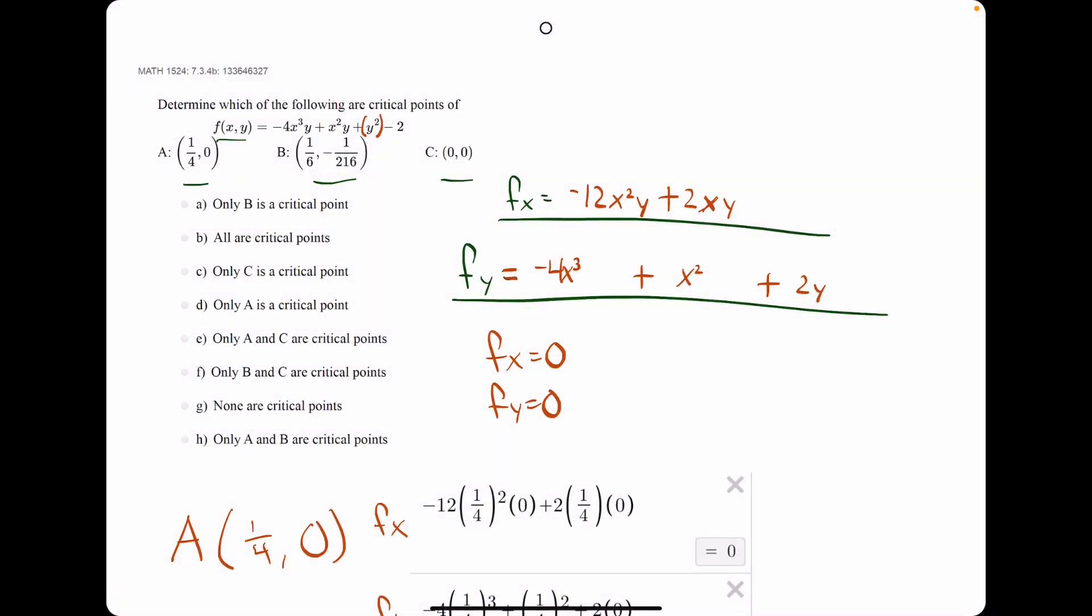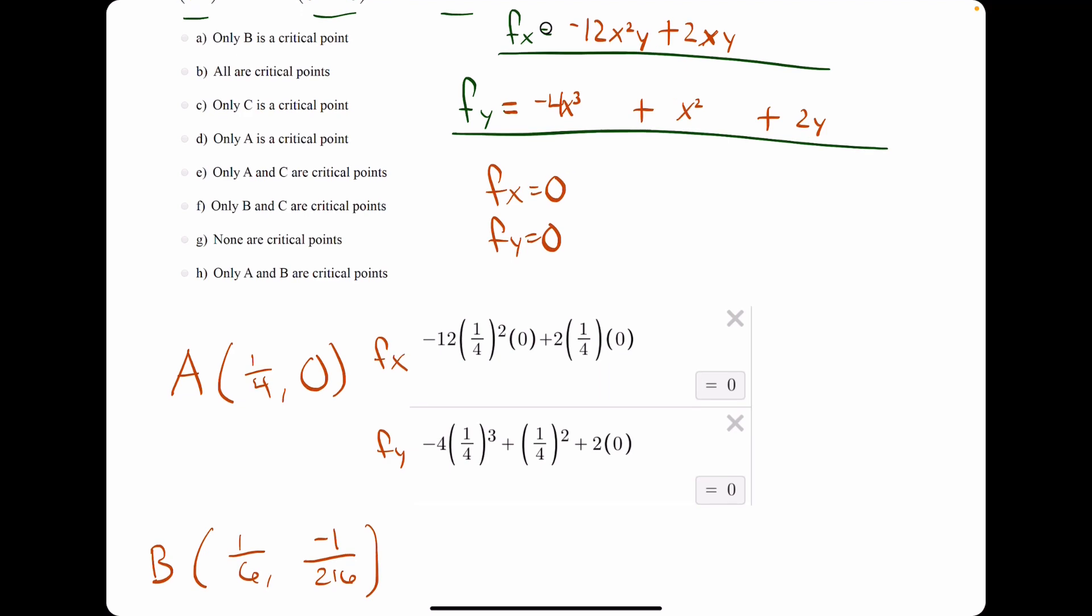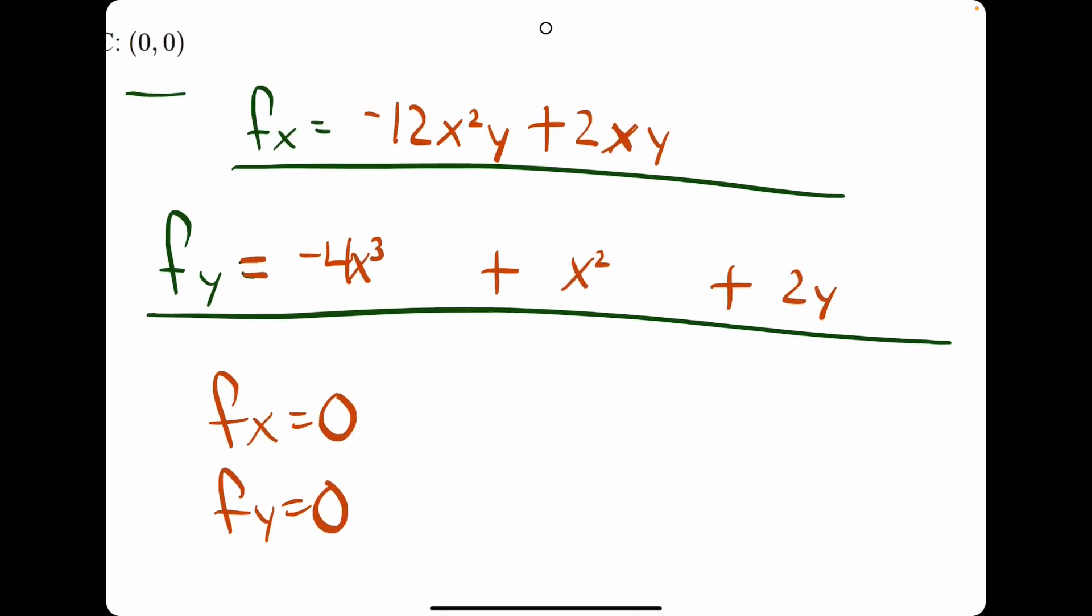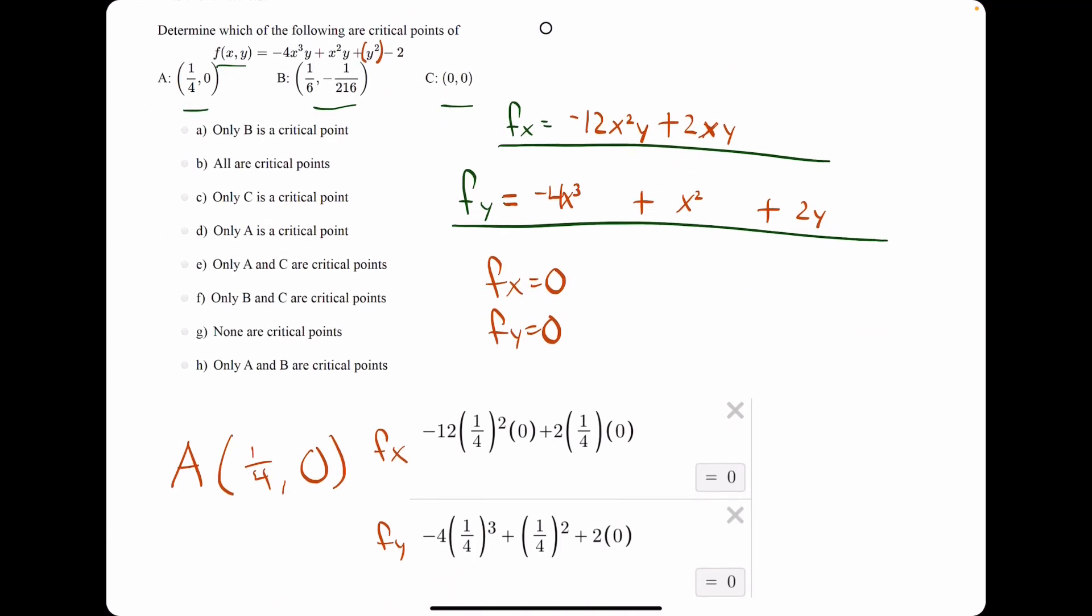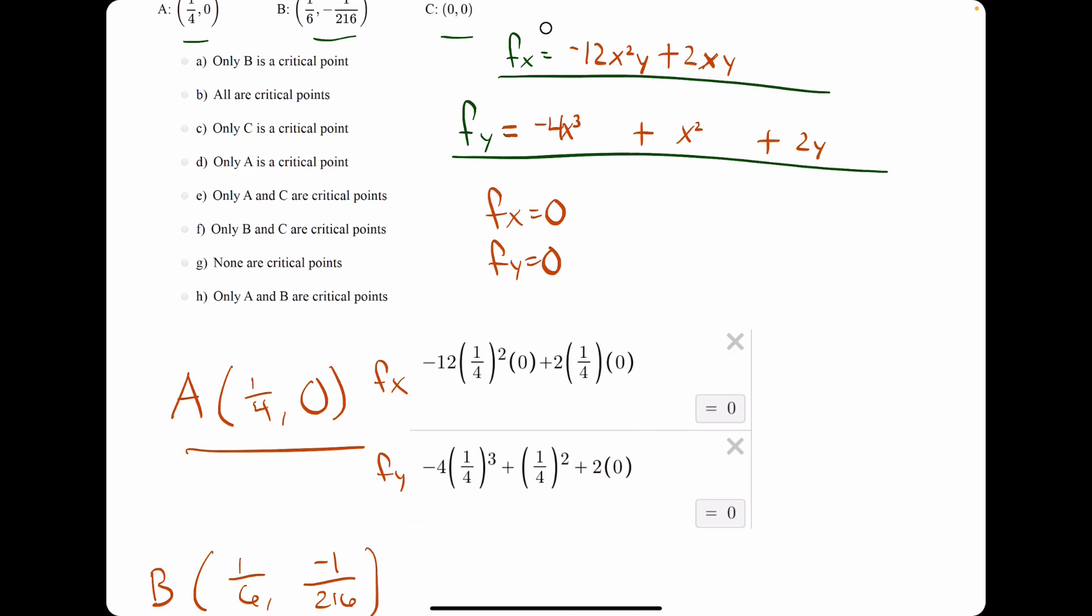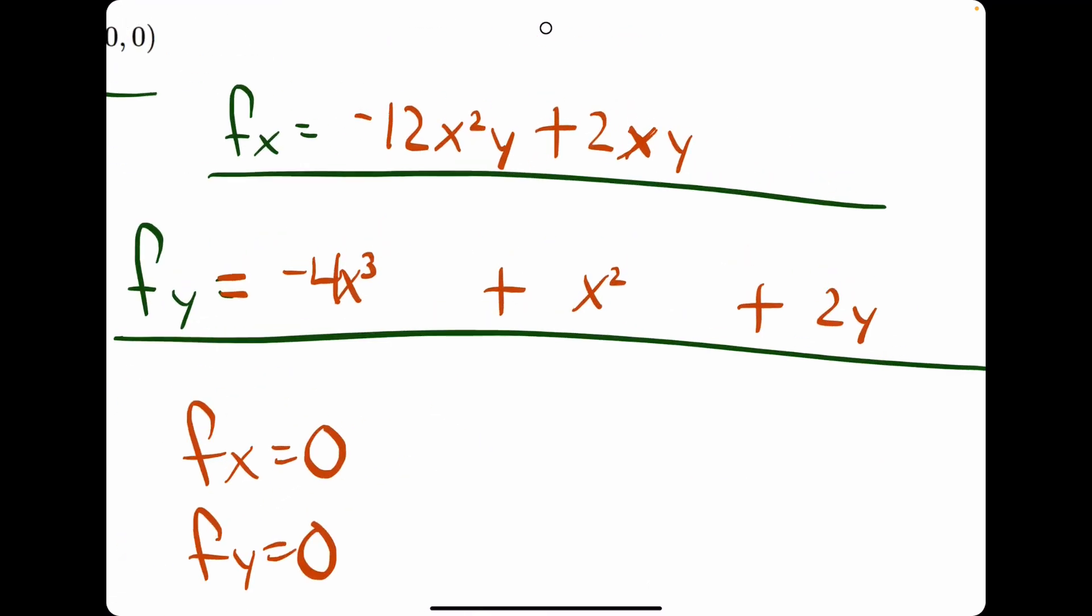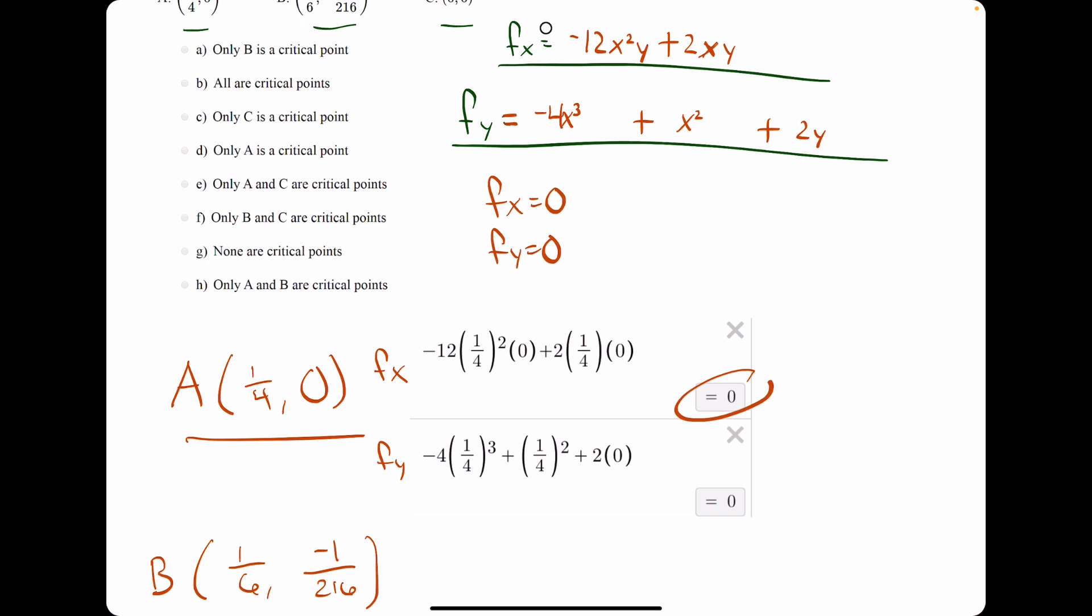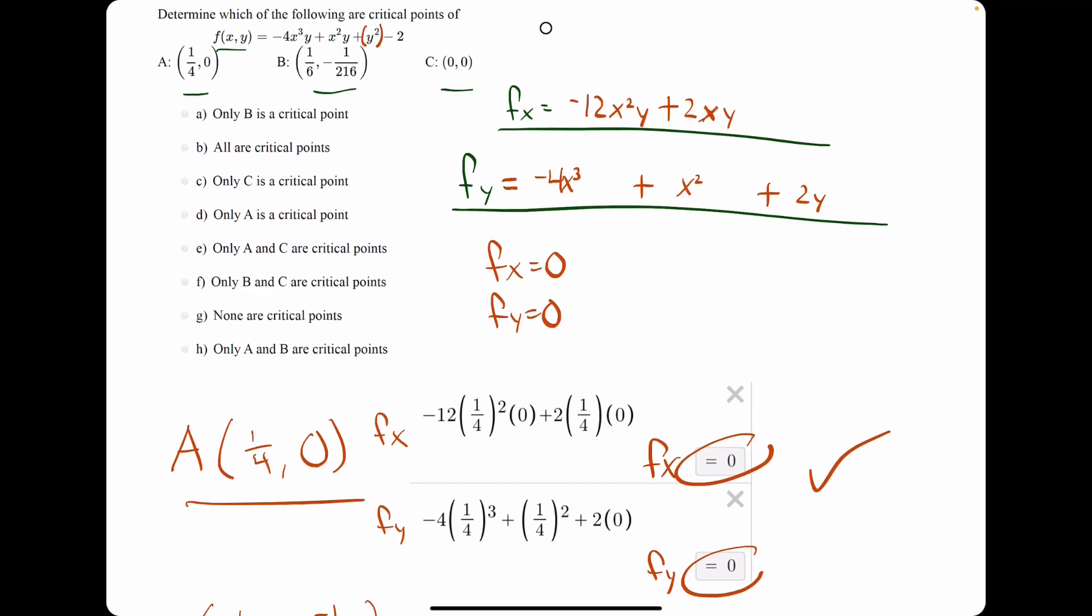All right, so we've plugged in the ordered pairs to both fx and fy for all three options here. Talking through option A, we had 1 fourth comma 0, so plugging in 1 fourth and 0 into fx and fy got us 0 for both fx and fy, so it checks out that A is a critical point.